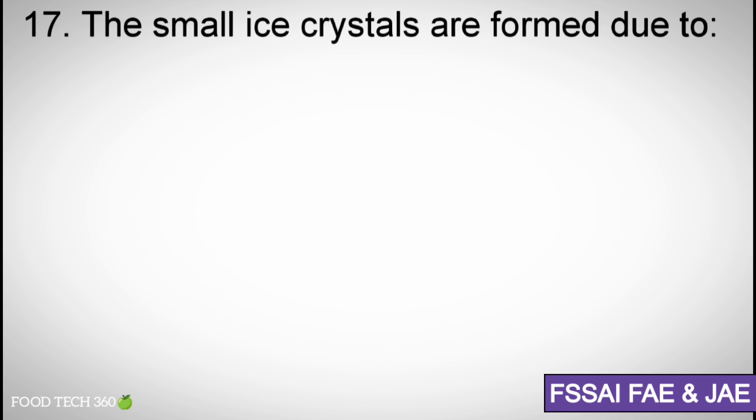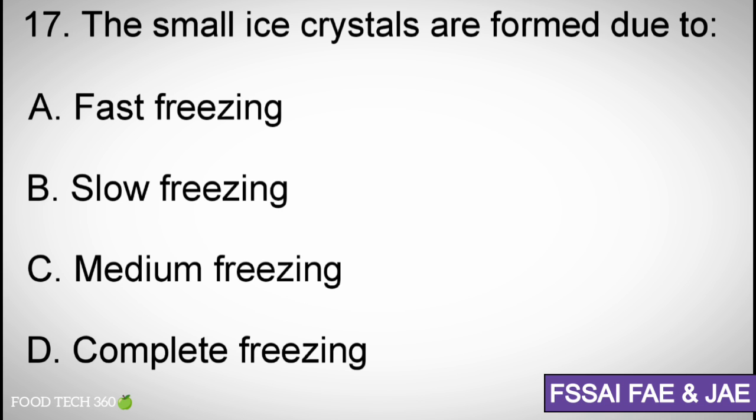Question number 17. The small ice crystals are formed due to? Options A. Fast freezing, B. Slow freezing, C. Medium freezing, D. Complete freezing. Correct answer A. Fast freezing.